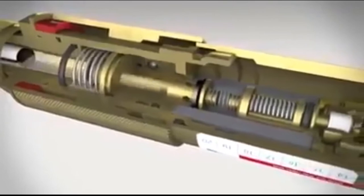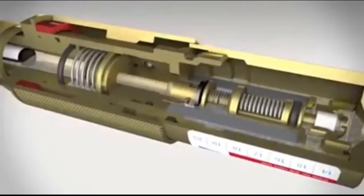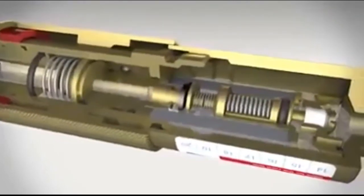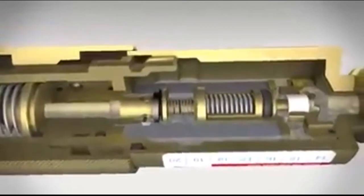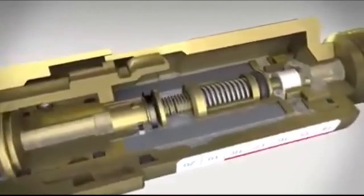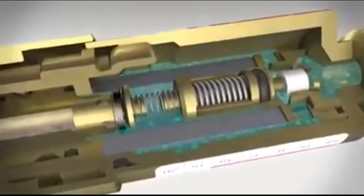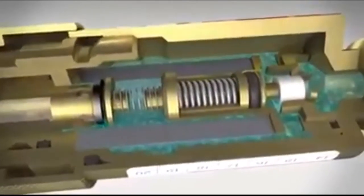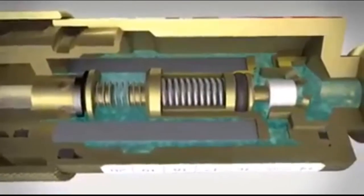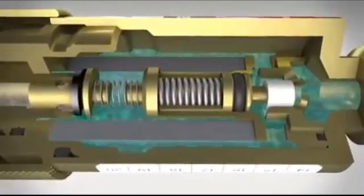Let's have a look at the principle behind the flashback arrestor in more detail. If a hazardous situation arises and unwanted gases flow through the pipeline, the spring-loaded non-return valve will come into action. It stops the return flow instantaneously, thereby preventing the formation of an explosive gas mixture.